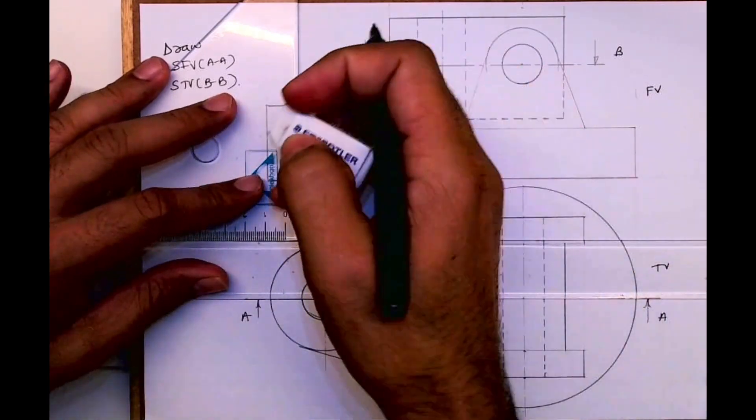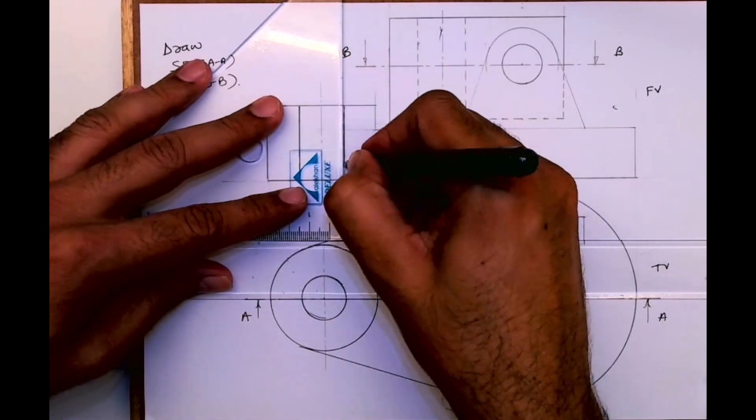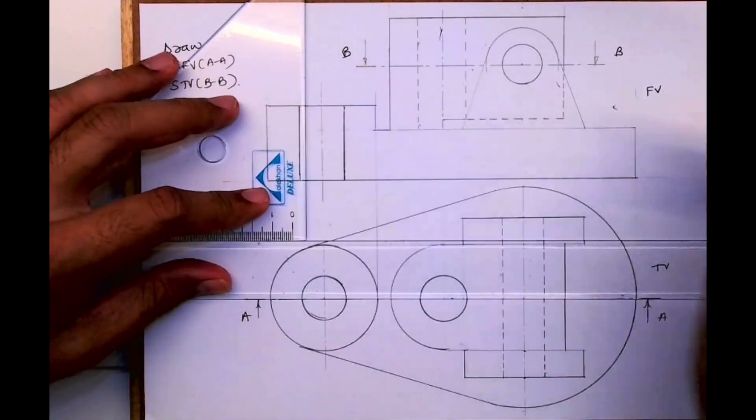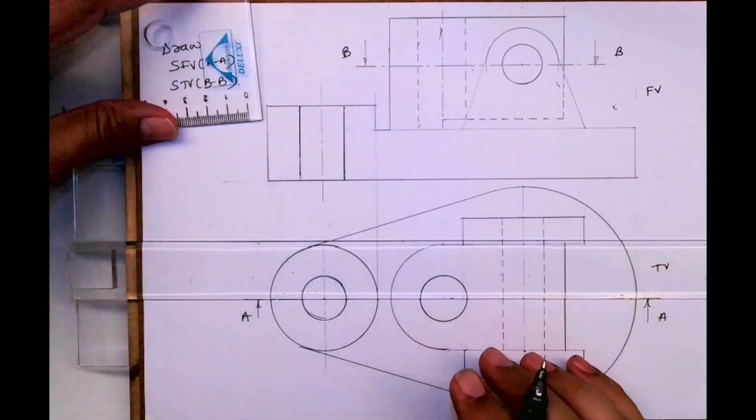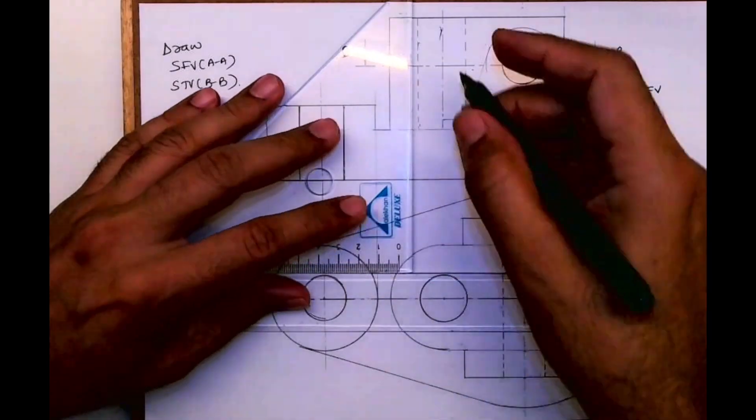Whatever is in between, because it's hollow, will go away. Again the dotted will become dark, this will go away. Then on this side, it is cutting a circle, so the dotted will become dark.